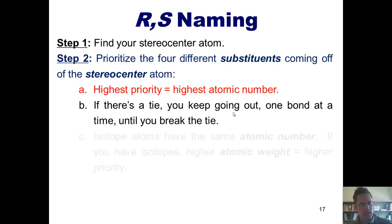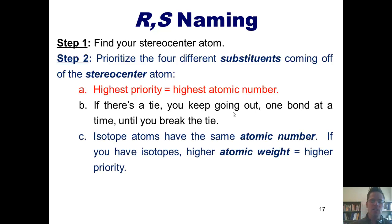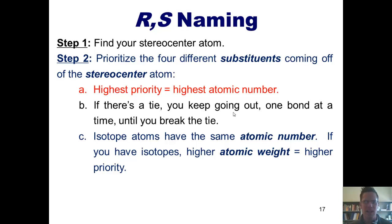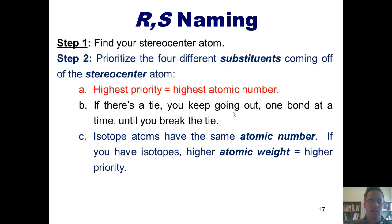One thing worth mentioning: isotope atoms have the same atomic number, so if I have two isotope atoms of each other, which one gets higher priority? As it turns out, the one that gets higher priority is the isotope that has the higher atomic weight.